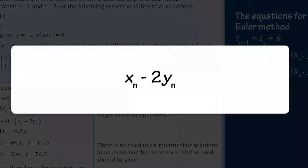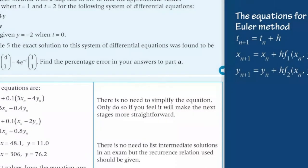So the formulae become xn plus 1 equals xn plus 0.1 multiplied by 3xn minus 4yn, and yn plus 1 equals yn plus 0.1 multiplied by xn minus 2yn.